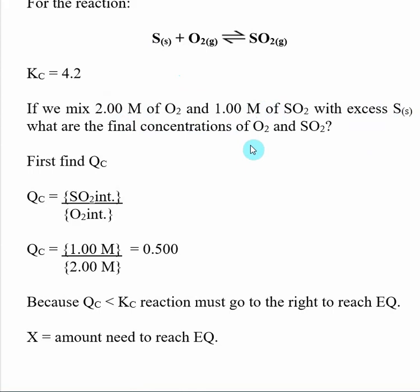So what we want to do now is find out what direction the reaction is going, and then more importantly what's going to be the new concentrations of O2 and SO2 once we reach equilibrium. So the first thing we need to find is Q, and Q is just our equilibrium expression with non-equilibrium values.